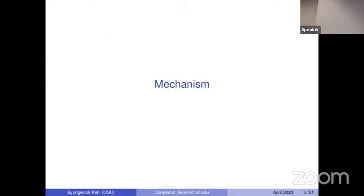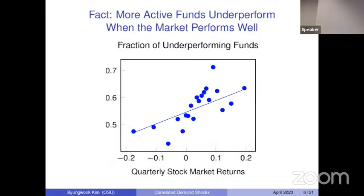I'll talk about the mechanism because it's not entirely clear why benchmarking generates pro-cyclical risk-taking behavior. Active fund managers struggle to beat the stock market, but what is really interesting is the time series pattern. They actually struggle more when the stock market is performing better — meaning when their benchmark is performing better. The y-axis is a fraction of underperforming funds and the x-axis is contemporaneous stock market returns, and there's a strong positive relation. When the stock market is doing well, typically more than 60% of fund managers struggle to beat their benchmark.